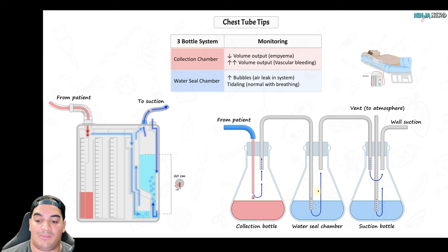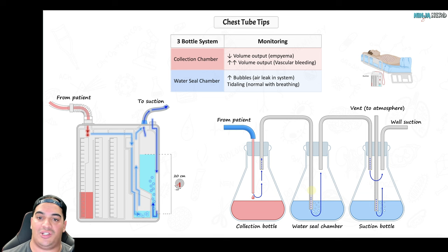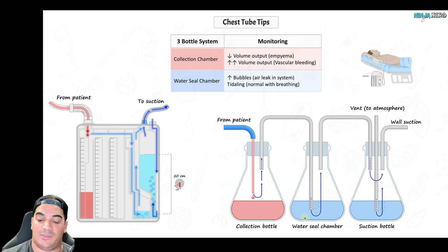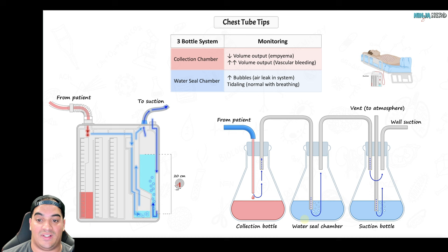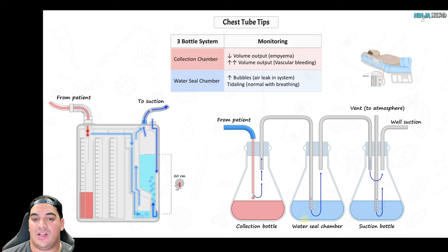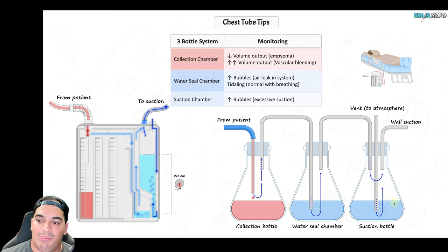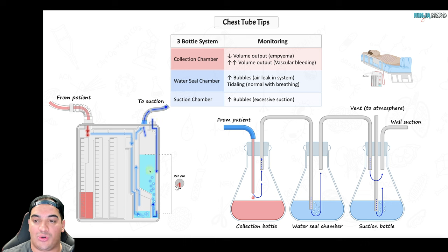Tidaling in the water seal chamber — fluid moving up and down with breathing — is normal. It reflects changes in intrapleural pressure with each breath. If there is no tidaling, suspect a kink or occlusion in the tubing. In the suction control chamber, gentle bubbling is normal. Excessive bubbling means too much suction is being generated and should be turned down to avoid the chest tube sucking on lung tissue and causing injury.